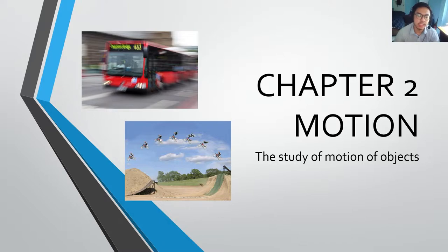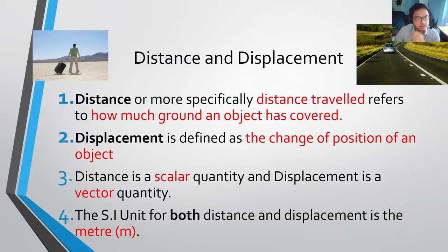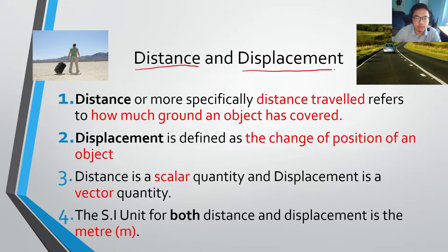In this chapter, we look at things like distance, displacement, speed, velocity, and acceleration. These are terms that we use to describe motion in physics. For this first video lesson, we're going to look at two terms: distance and displacement.